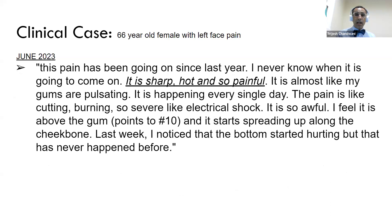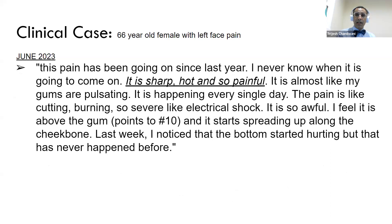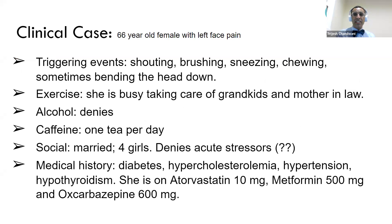Using the patient's own words is helpful — she said: 'It's sharp, hot, and so painful. I never know when it's going to come.' She started crying when describing it: 'The pain is like cutting, burning, so severe like electric shock.' Her trigger zones include shouting, brushing, sneezing, chewing, and sometimes bending the head down. The understanding of trigger zone mechanisms is still lacking in this condition, even though we've known about this disease for hundreds of years. She has a medical history of diabetes, cholesterol, and hypertension.